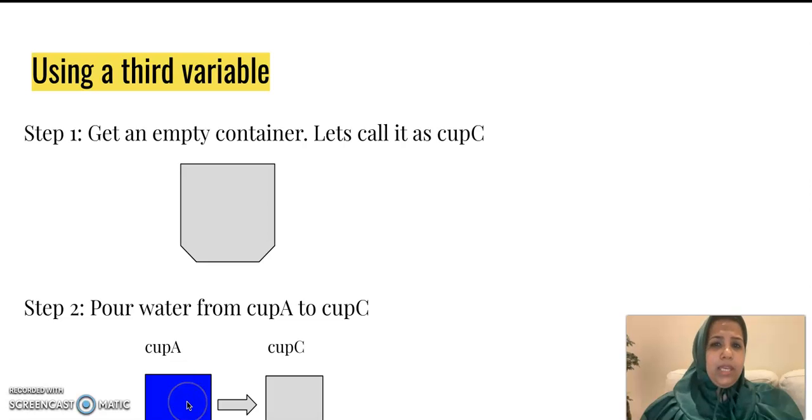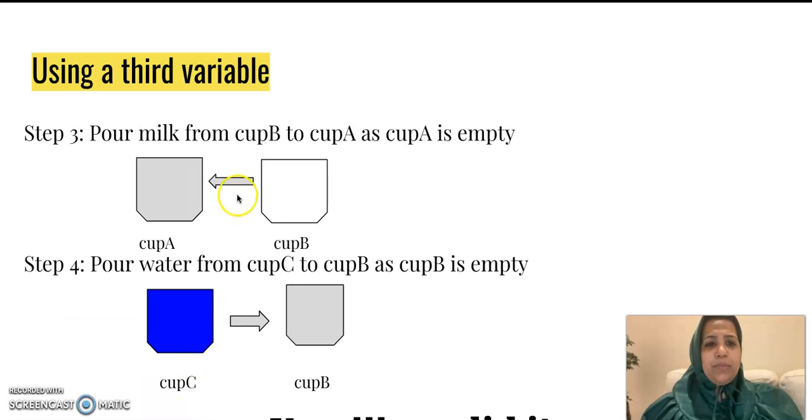That is when cup A becomes empty. Now because cup A is empty, I am pouring the milk from cup B into cup A. After this step, cup B also becomes empty. Since cup B is empty now, we are now putting the water from the third variable, that is cup C, back into cup B. So three easy steps.